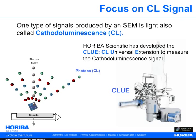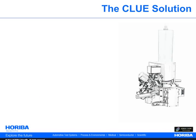HORIBA Scientific has developed a comprehensive range of cathodoluminescence systems called the CLU series for cathodoluminescence imaging and spectroscopy. The CLU is a modular and flexible platform designed to suit a large range of applications and requirements.